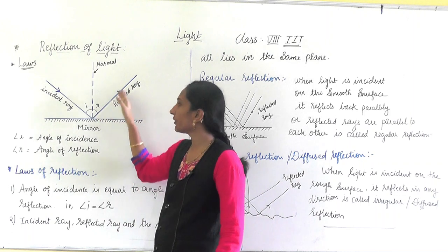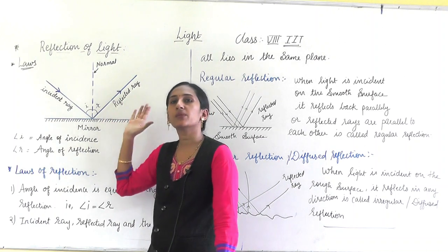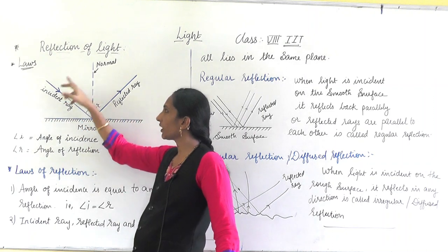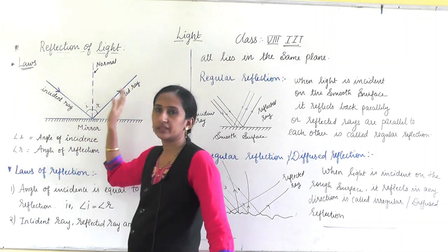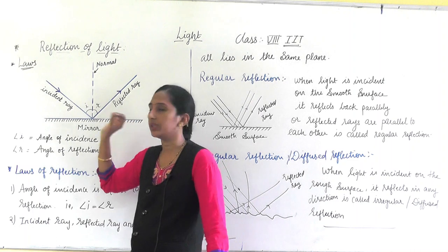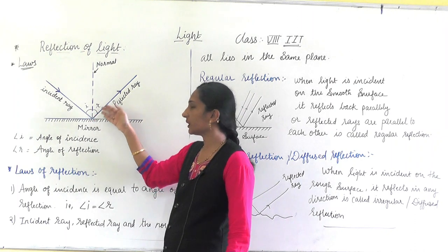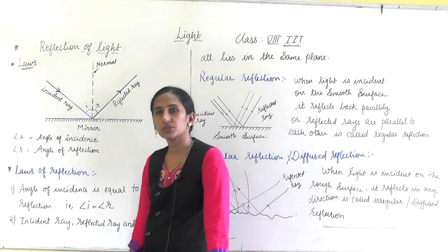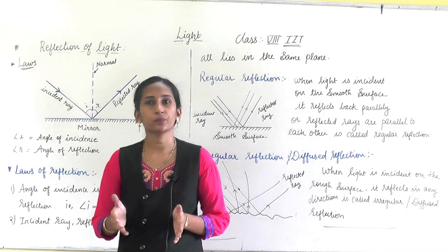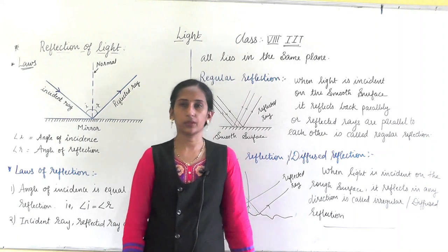For example, if the angle of incidence is 30 degrees, the angle of reflection will also be 30 degrees. If it is 60 degrees, then the reflected angle is also 60 degrees. Similarly, if angle of incidence is 45 degrees, the angle of reflection is also 45 degrees. Complete the table in your textbook and read the chapter thoroughly. Thank you.